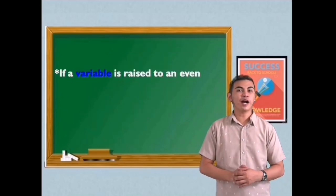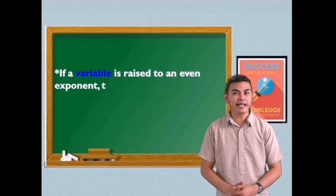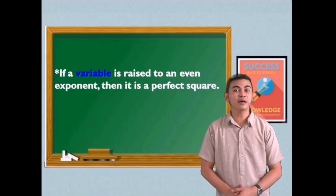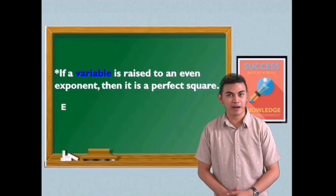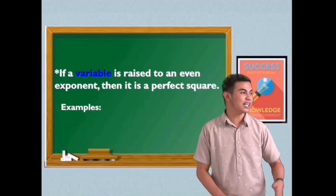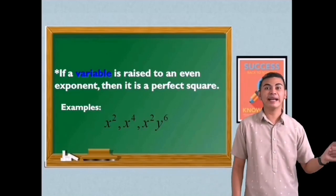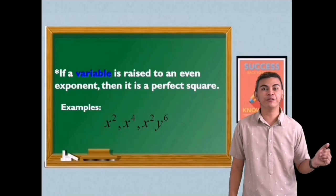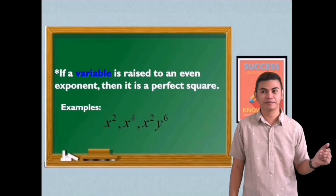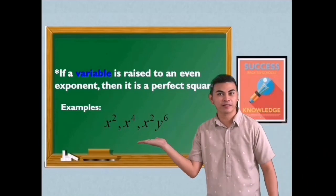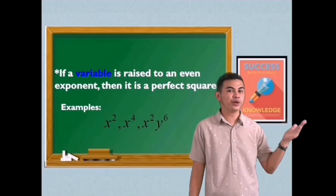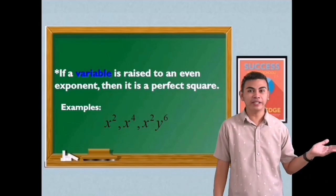If the variables are raised with an even exponent, then it is a perfect square. Let's have an example. x squared — that is a perfect square. x to the fourth, and x squared y to the sixth.